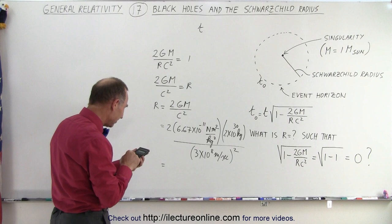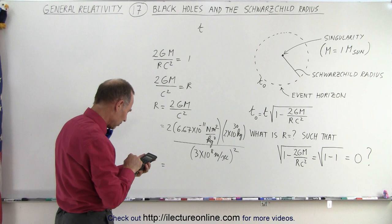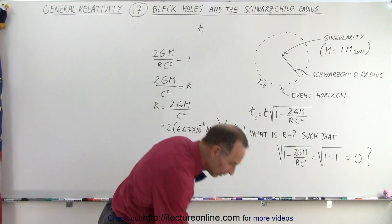So 2 times 6.67e to the 11 minus times 2e to the 30th divided by 3e to the 8 squared equals... Oh, I did something wrong. Let me try it again. 2 times 6.67e to the 11 minus times 2e to the 30th divided by 3e to the 8 squared equals... And this result was